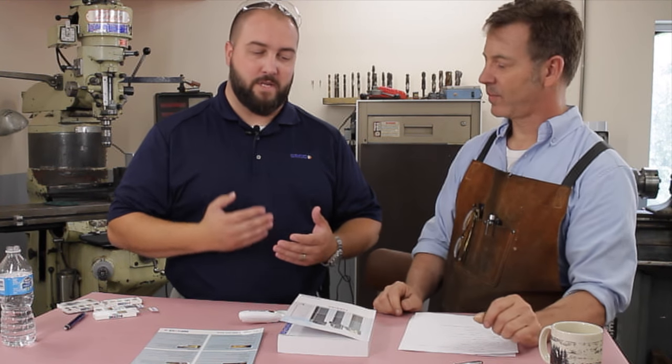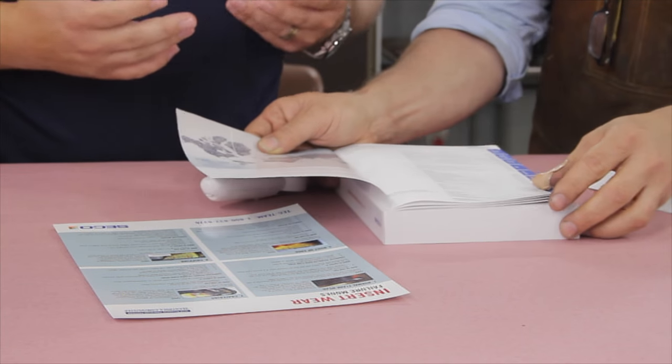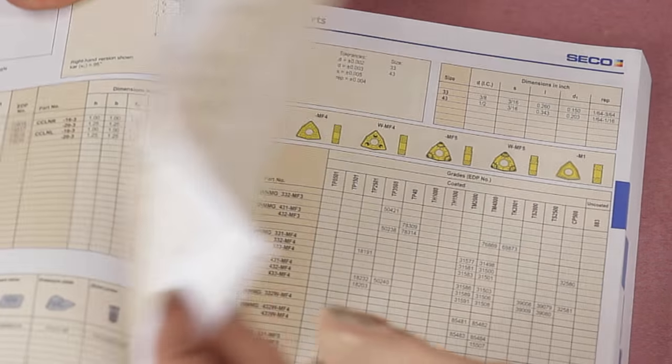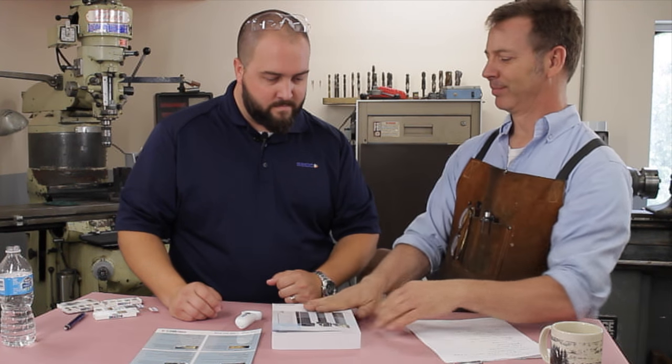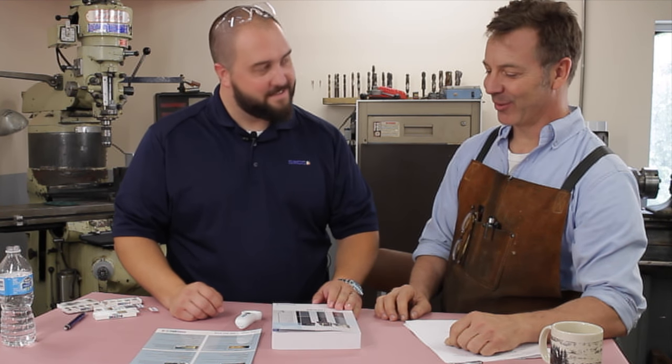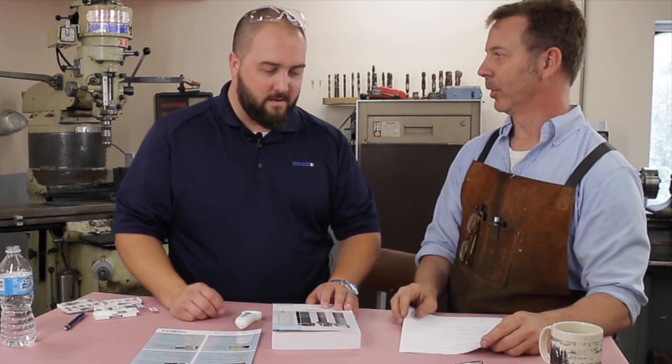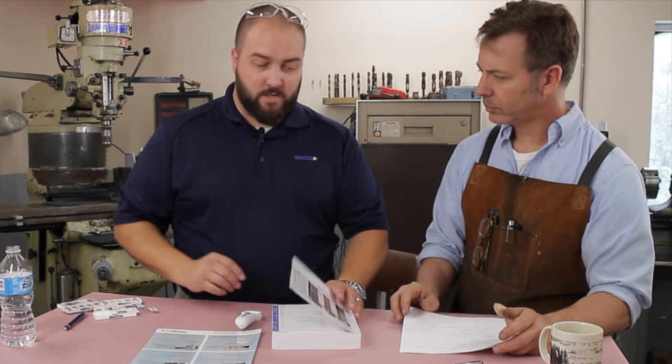So whether it would be a Seco product or somebody else's product, it'll still apply to it. What I wanted to show you real quick here is in a turning catalog, the Seco turning catalog. Most guys that do what we do have a machinist handbook. This turning catalog is almost just like a machinist handbook. It's some ways better.